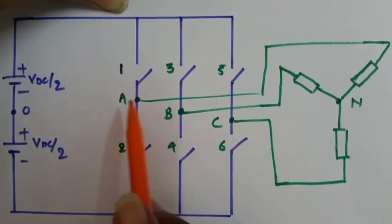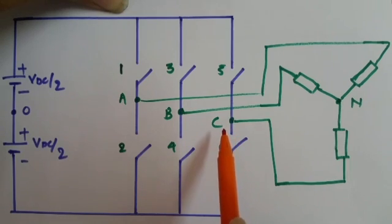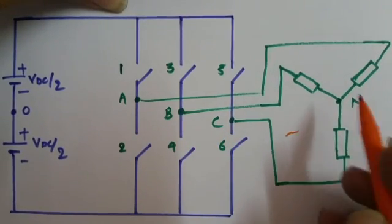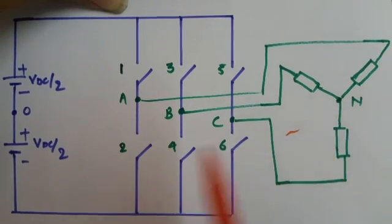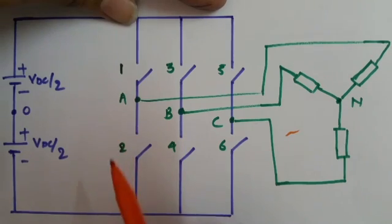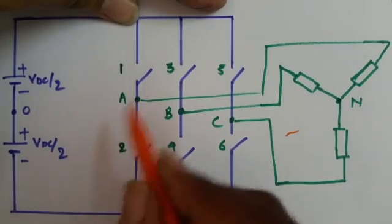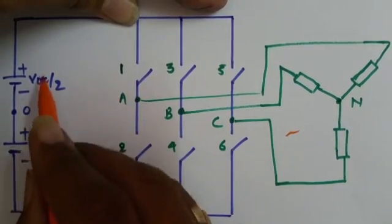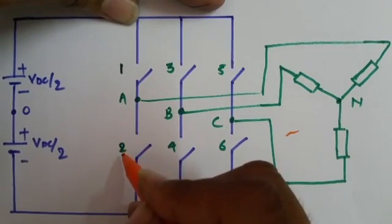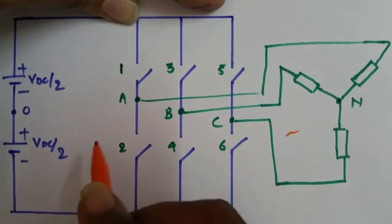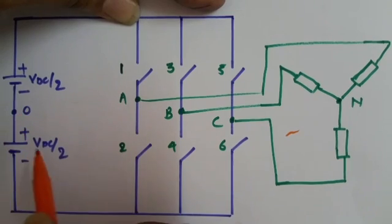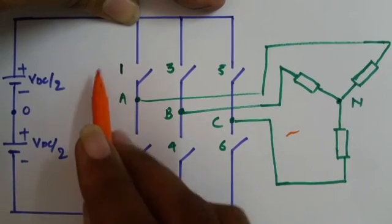Now, here we have 3 wings: wing A, wing B, and wing C — these 3 phases — which we are connecting to a 3-phase load. If we talk about wing A, phase A, we can have VDC/2 output in the case where switch 1 is on and switch 2 is off, between V_AO. And minus VDC/2 output is there between V_AO if switch 2 is on and switch 1 is off.